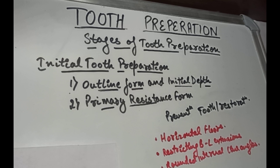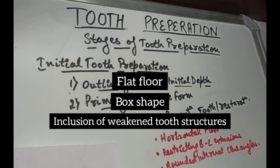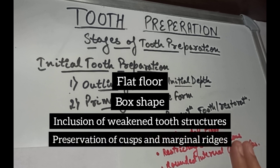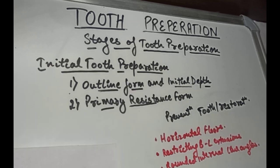Sharp line angles act as areas of stress concentration. The features for the primary resistance form are: flat floor, box shape, inclusion of weakened tooth structure, preservation of cusps and marginal ridges, and reduction of the cusp for capping whenever indicated.